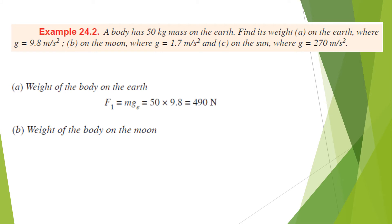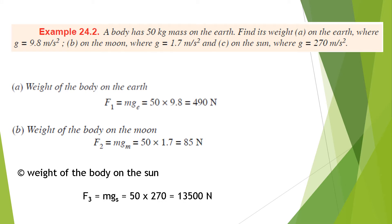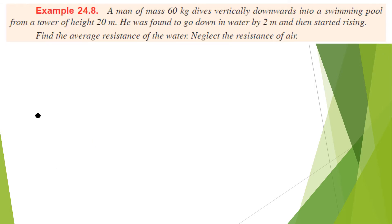Weight on the Moon equals 50 × 1.7 = 85 Newtons. The weight varies from Earth to Moon because the acceleration of gravity is different. Finally, the weight on the Sun is 50 × 270 = 13,500 Newtons.